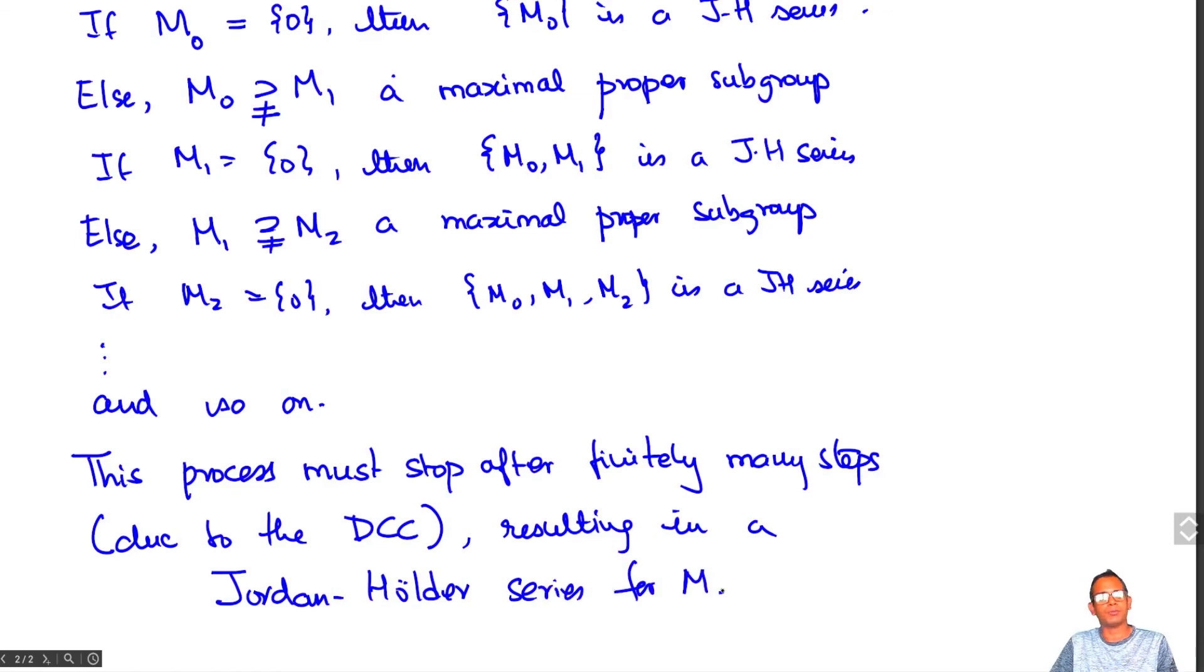So in some sense, both these proofs are algorithmic. The first one tells you how to construct a maximal submodule and the second one tells you how to construct the Jordan-Hölder series by taking a sequence of maximal proper submodules.